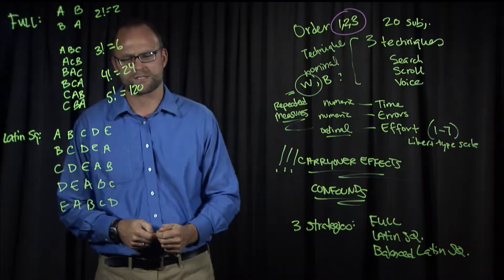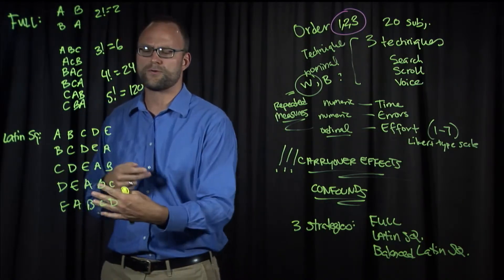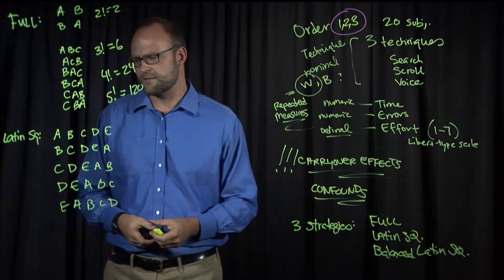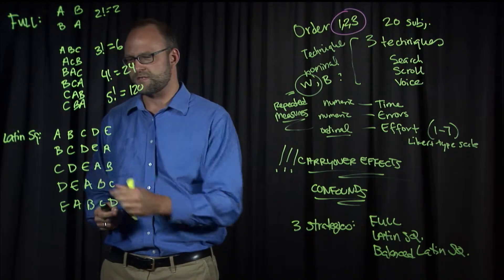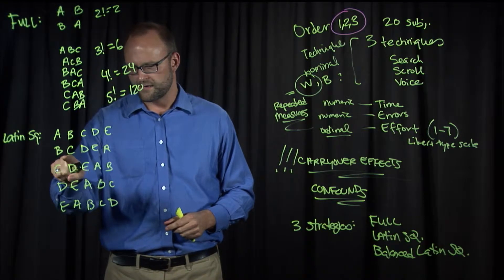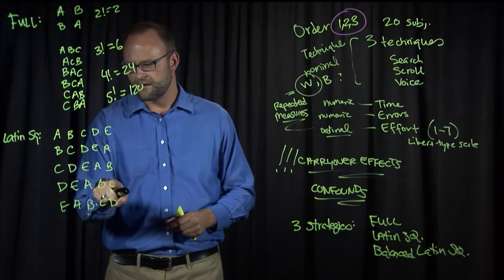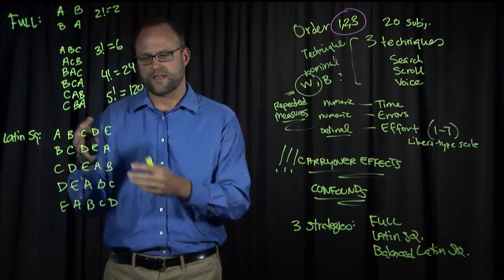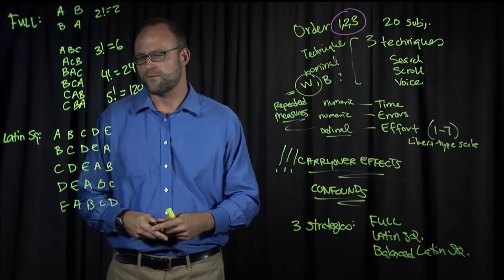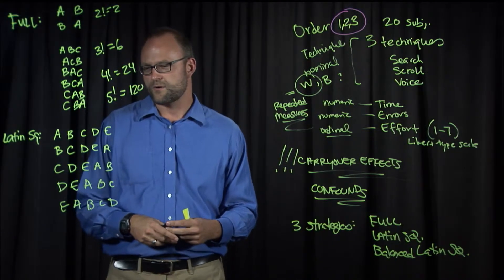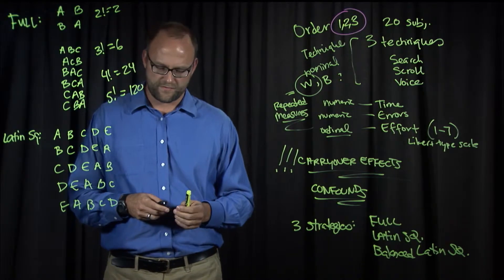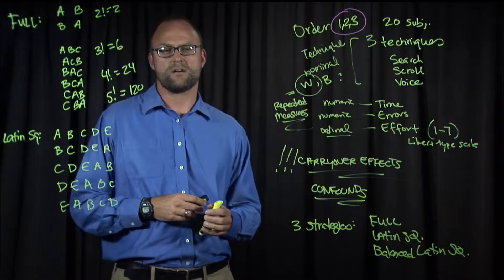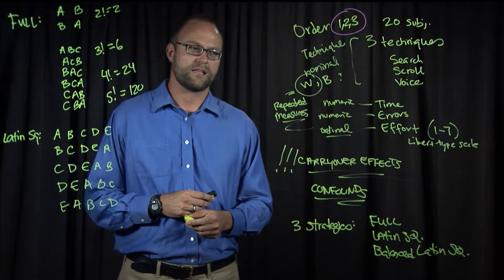There's still a challenge here, though, which is that not all conditions follow the other conditions in exactly the same number of times. For example, C follows A here and not here, not here, but here and here. That wouldn't be the case for E following A, where things are different. So we still could have carryover effects, and we'll look into solving that with the balanced Latin square.